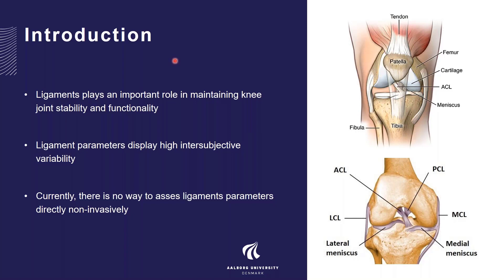Ligaments play an important role in maintaining knee joint stability and functionality. Just for those of you in the audience who are not knee experts: the knee overall contains four bones — the femur, the tibia, fibula, and the patella — and today we will focus primarily on the tibiofemoral joint. The major ligaments controlling this joint are the lateral collateral ligament, the medial collateral ligament, the anterior cruciate ligament, and the posterior cruciate ligament. These are the major ligaments for controlling joint stability in combination with the shape of the bones and the meniscus.